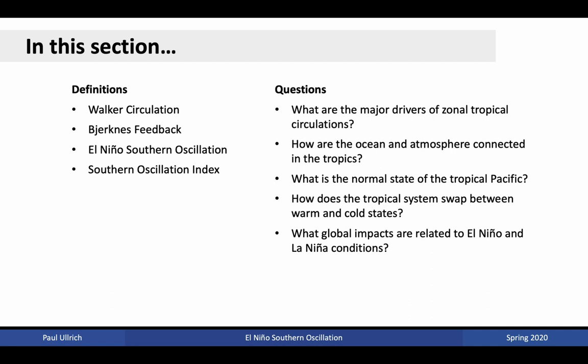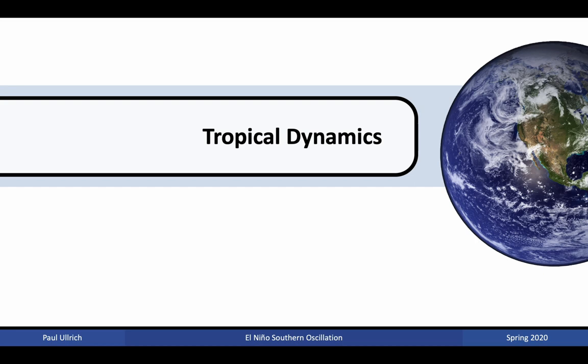The questions we'll answer are: what are the major drivers of zonal tropical circulations, how are the ocean and atmosphere connected in the tropics, what is the normal state of the tropical Pacific, how does the tropical system swap between warm and cold states, and what global impacts are related to El Niño and La Niña conditions. This lecture is broken up into two parts: first we'll discuss the basics of tropical dynamics, then the oscillation known as ENSO.